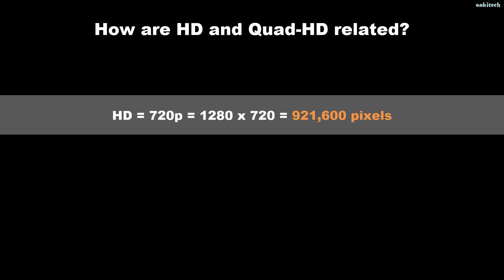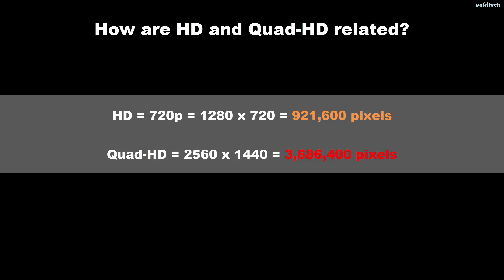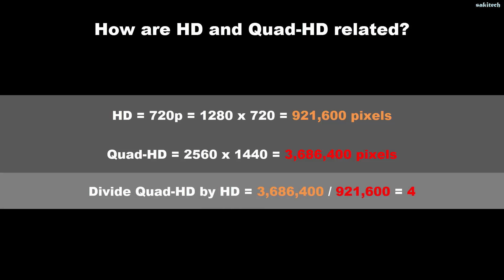Now let's look at the relation between HD and Quad HD. HD is 720p, and quad means 4, so Quad HD means 4 times HD. HD is 1280 by 720 — multiply those two numbers and you get 921,600 pixels. Quad HD is 2560 by 1440 — multiply those and you get 3,686,400 pixels. Divide the Quad HD pixel count by the HD pixel count and the answer is exactly four.